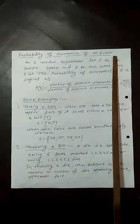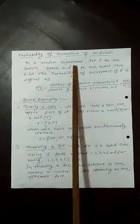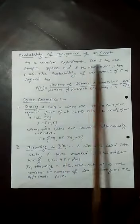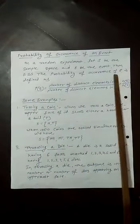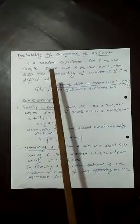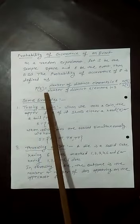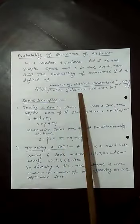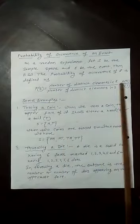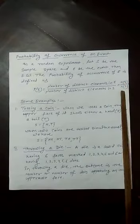Next, probability of occurrence of an event. In a random experiment, let S be the sample space and E be the event, then E is a subset of S. The probability of occurrence of E is defined as P(E). P(E) equals the number of distinct elements in E divided by the number of distinct elements in S, or the cardinal number of E divided by the cardinal number of S.